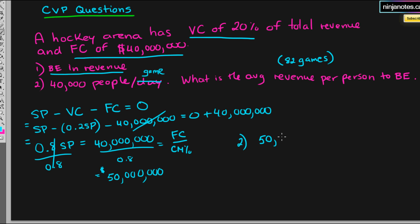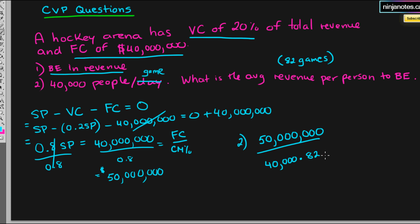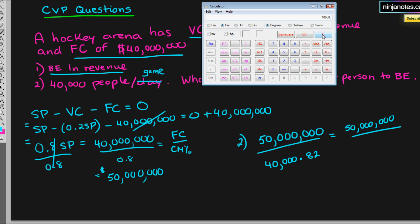We know the breakeven point is $50 million of revenue. In the denominator, we put the total number of people purchasing tickets over the course of the season: 40,000 people per game times 82 games, which equals 3,280,000.